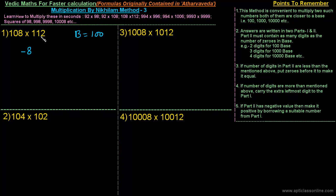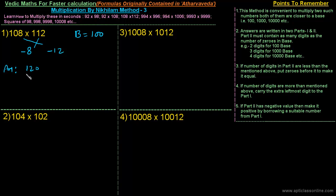As you have seen in earlier examples, you can directly write down the answer. The answer will contain two parts. In the first part, we write the difference of 108 and minus 12, or equivalently 112 and minus 8. The difference of 108 and minus 12 is 120, so 120 is the first part.